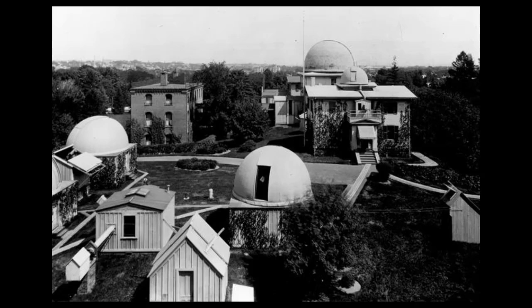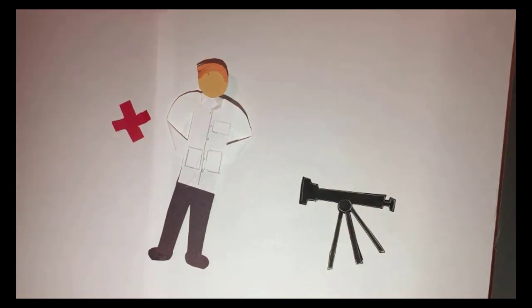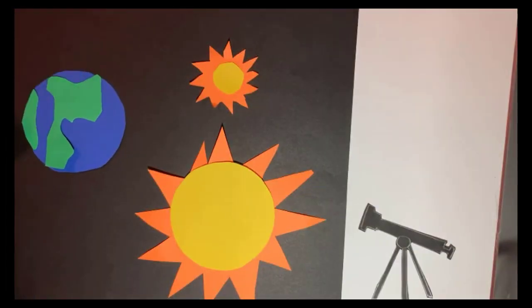However, Henrietta was never allowed to conduct her own research. Leavitt was grouped with other female staff members as a computer and could only examine and classify photographs of stars taken at the observatory. Her task was to compare the luminosity of various stars.